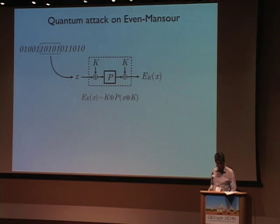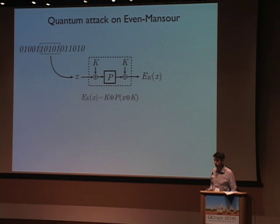It's not sufficient to have a quantum computer. We need slightly more. So let me start with a simple example. It's not ours, but it illustrates very well how this works. This is the attack on the Even-Mansour scheme.